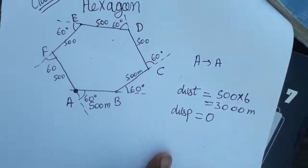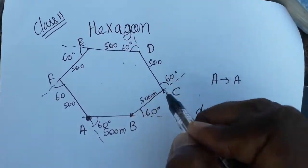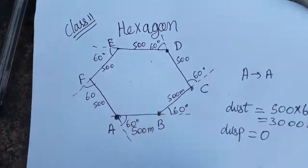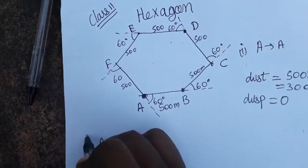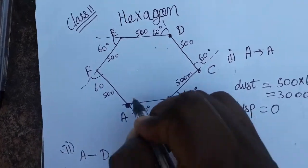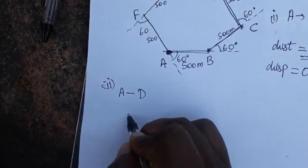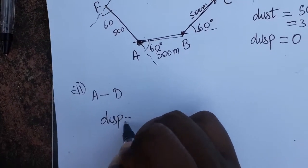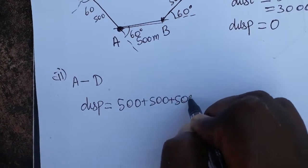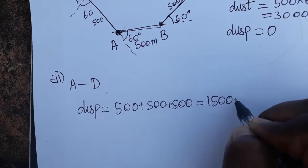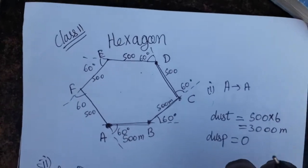Now Case 2: the object starts from A, goes to B, then C, and stops at D. The actual path length is 500 + 500 + 500, which is 3 times 500 — so the distance is 1500 meters. Now, what about the displacement? I have a shortcut technique for that.